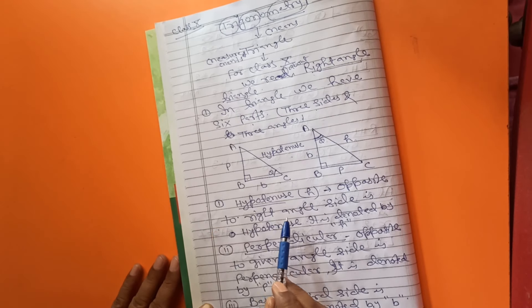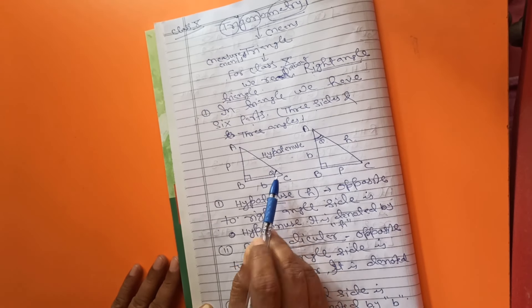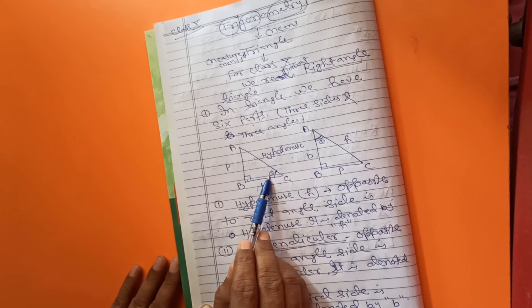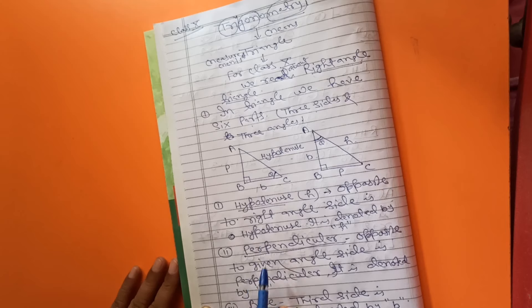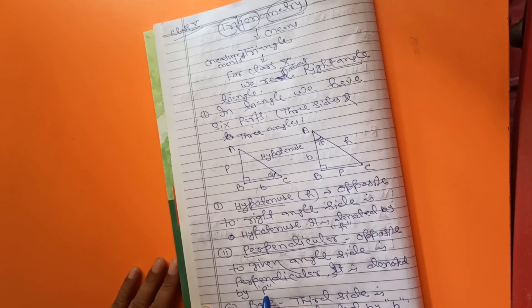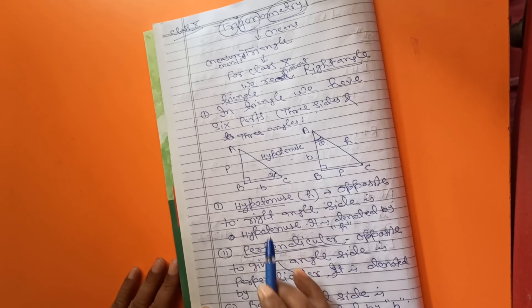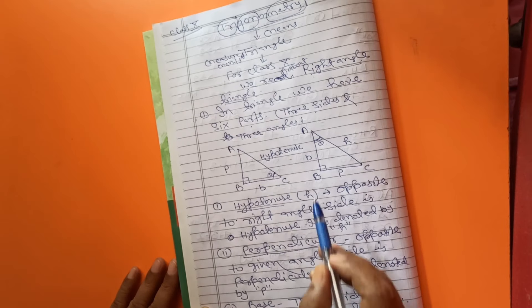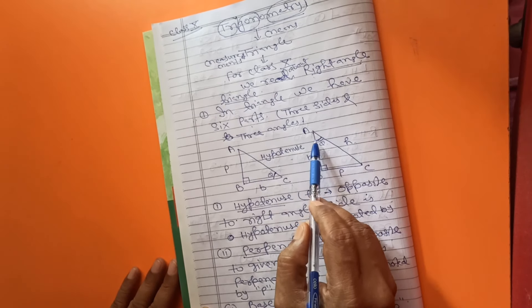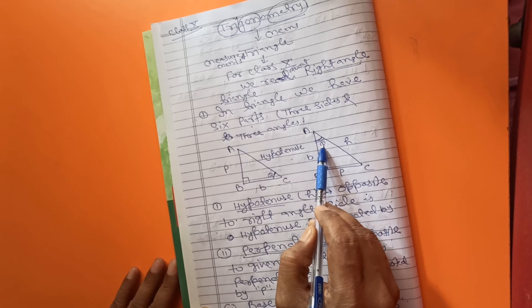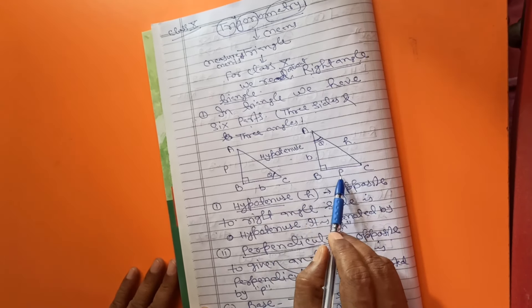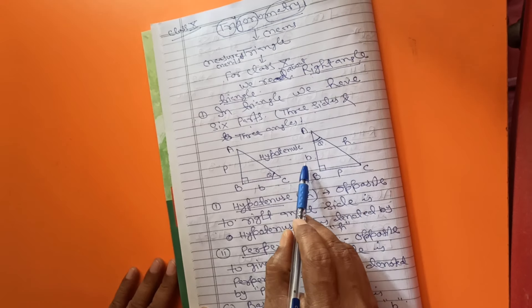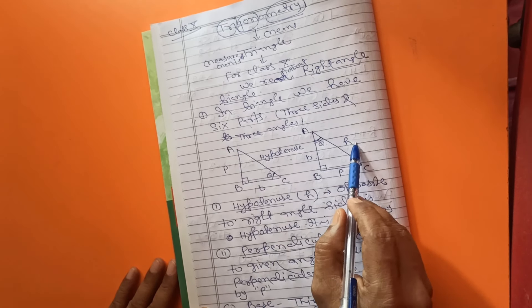Perpendicular. Opposite to given angle. Here, angle C is given. That is theta. So this is perpendicular. And it is denoted by P. And third side is base. In the second figure, we have taken angle A. That is theta. So opposite to given angle, means this is perpendicular. And this is base. And this is hypotenuse.